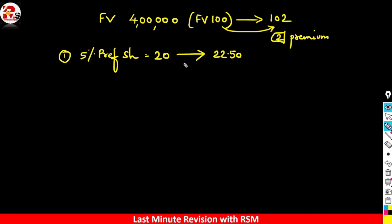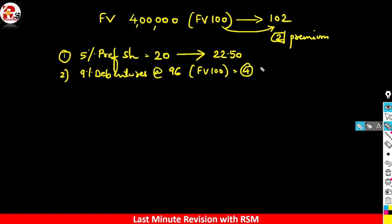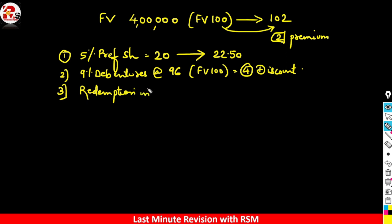For the second option, the company said: we will give you 9% debentures, and the value of these 9% debentures will be 96 rupees. So check — face value is 100, but they are given at 96, meaning a difference of 4 rupees — so there is a 4 rupee discount here. The third option given was: if you don't want either of these two options, you can take cash, so redemption in cash is the third option.